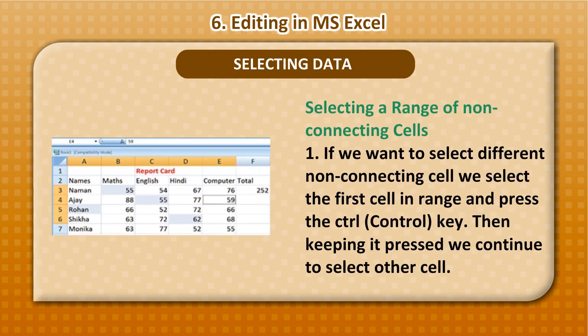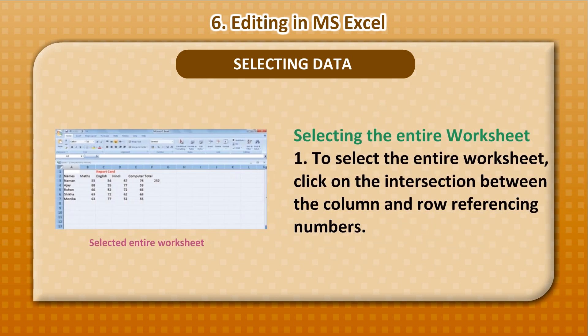Selecting a Range of Non-Connecting Cells: If you want to select different non-connecting cells, select the first cell in the range and press the Ctrl key. Then, keeping it pressed, continue to select the other cells.